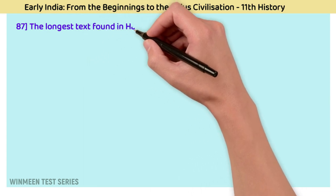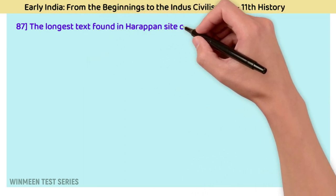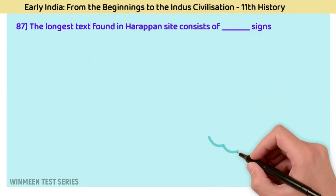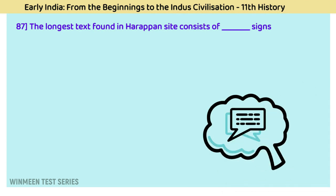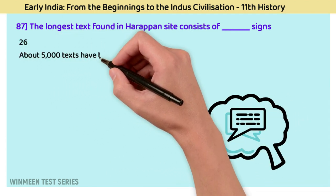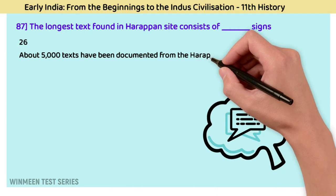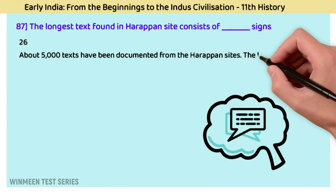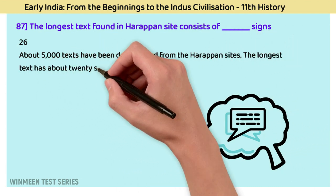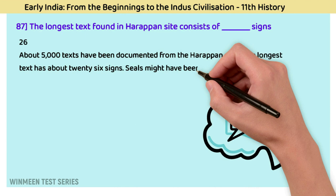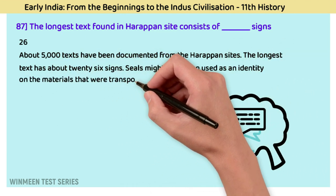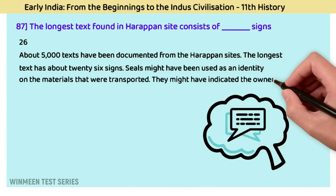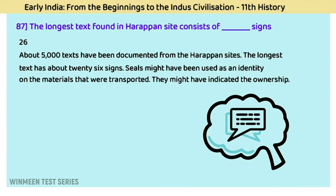Question 87: The longest text found in a Harappan site consists of? The answer is 26 signs. About 5,000 texts have been documented from Harappan sites. The longest text has about 26 signs. Seals might have been used as identity markers on transported materials, possibly indicating ownership.